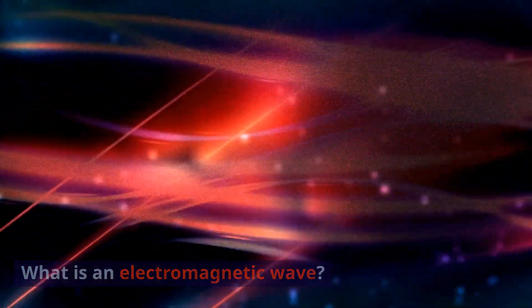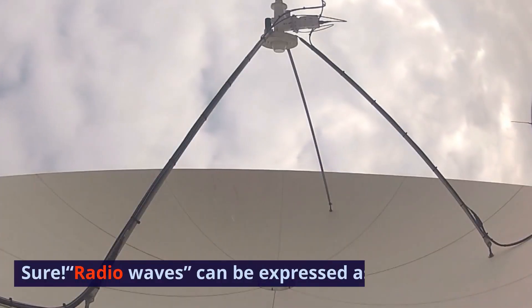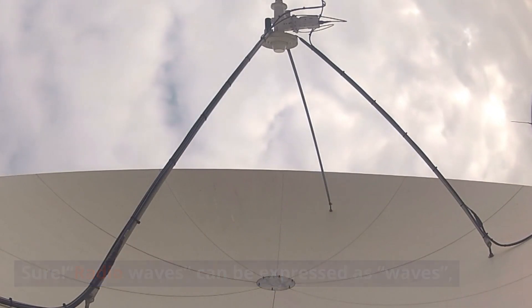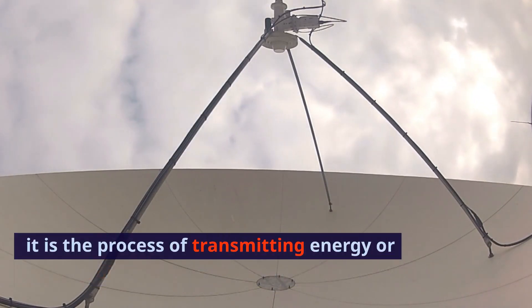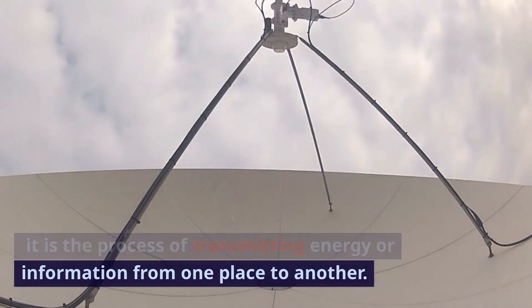What is an electromagnetic wave? Radio waves can be expressed as waves. It is the process of transmitting energy or information from one place to another.